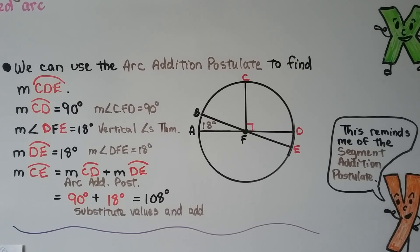We substitute the values and add. Doesn't that kind of remind you of the segment addition postulate? Two segments added together. Now we have two arcs added together.